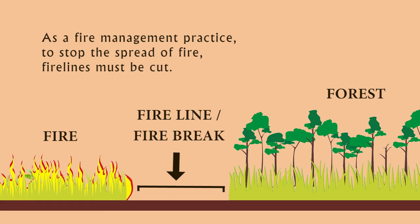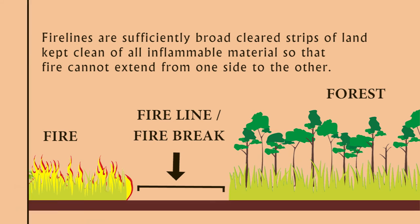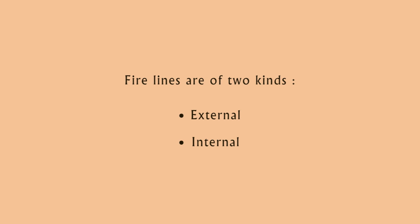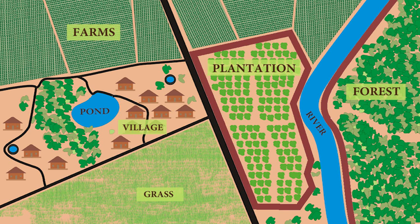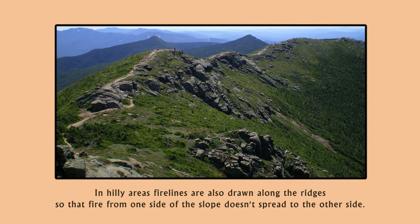As a fire management practice, to stop the spread of fire, fire lines must be cut. Fire lines are sufficiently broad cleared strips of land kept clean of all inflammable material so that fire cannot extend from one side to the other. Fire lines are of two kinds: external and internal. External fire lines are laid down along the external boundaries of the forests — divisional boundaries, range boundaries, and boundaries adjoining non-forest areas — and should be within the boundaries of forest land. Internal fire lines are fire breaks running criss-cross inside the forests, along section boundaries of plantations or inspection paths. The interior fire lines give access to control fire by counter firing. All spots from where water can be procured should be marked on the fire map. In hilly areas, fire lines are also drawn along the ridges so that fire from one side of the slope doesn't spread to the other side.